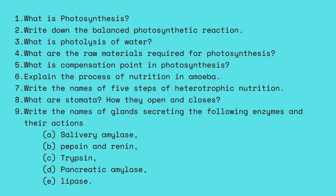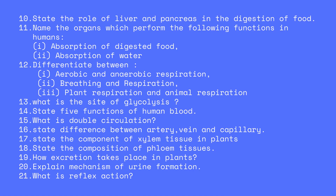Write the names of the glands secreting the following enzymes and their actions: salivary amylase, rennin, trypsin, pancreatic amylase, and lipase. Then state the role of the liver and pancreas in digestion of food. Name the organ which performs the following functions in humans: absorption of digested food and absorption of water.